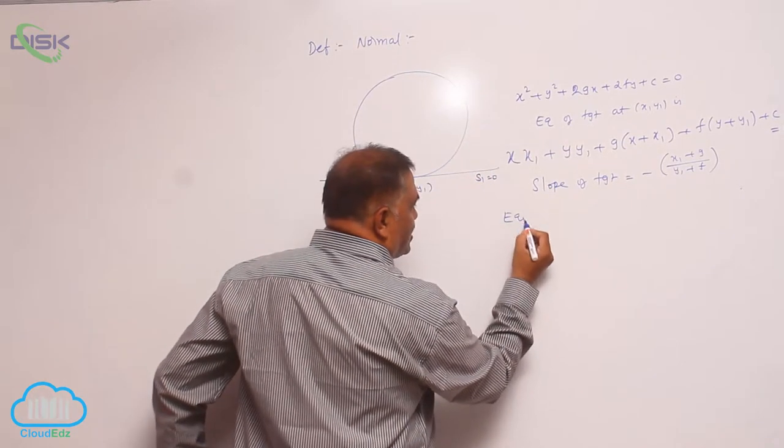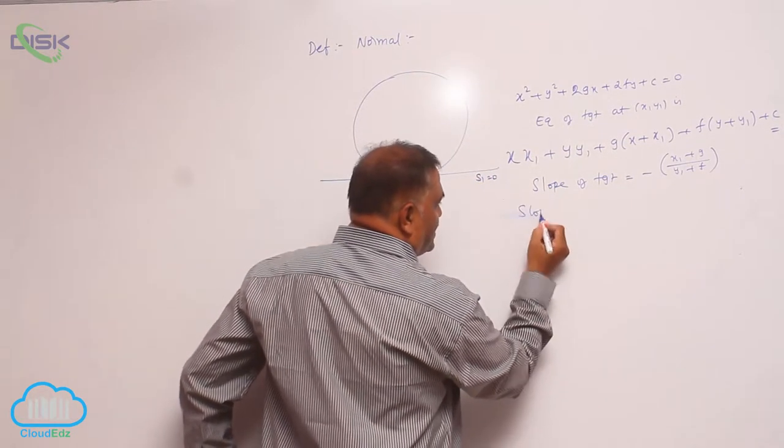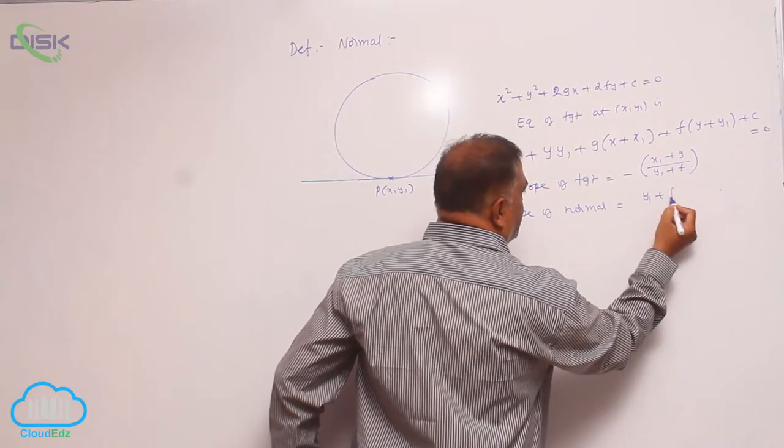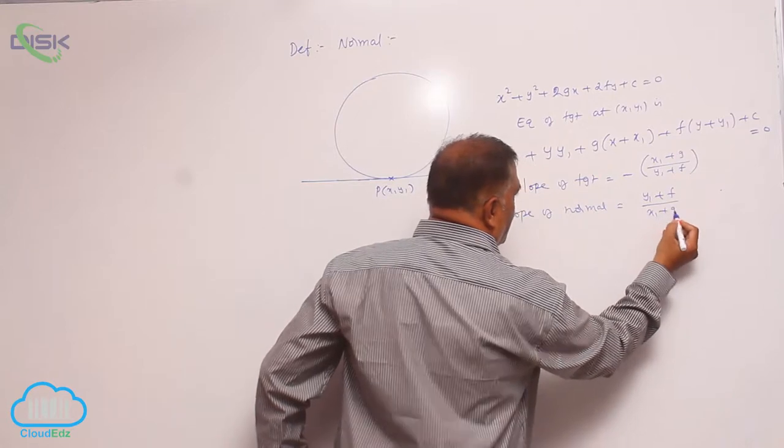So, the slope of normal equation is (y₁ + f)/(x₁ + g).